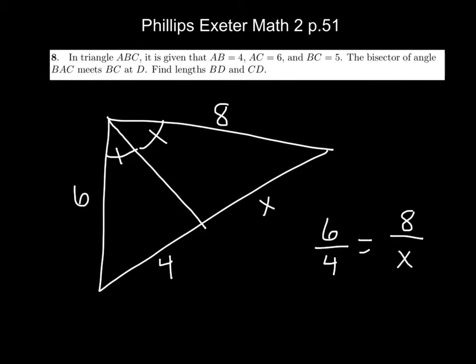And then from there, it's just cross multiplication. 32 equals 6x. Divide, and what did you get there? x equals like 5 point... 5 and 2 sixths, so 5 and 1 third. And we're good there.